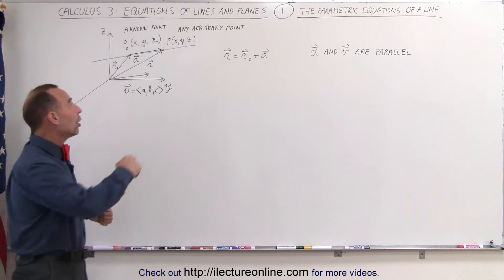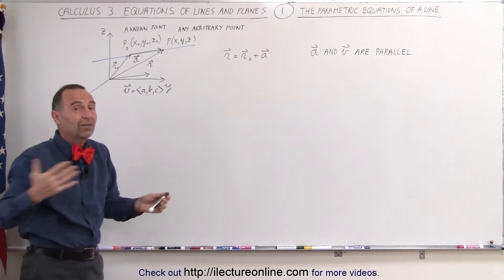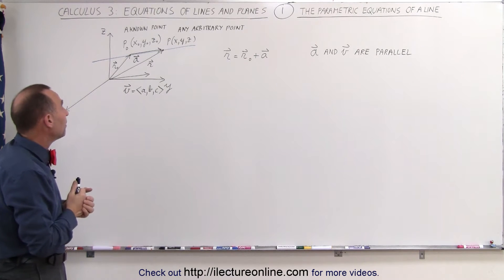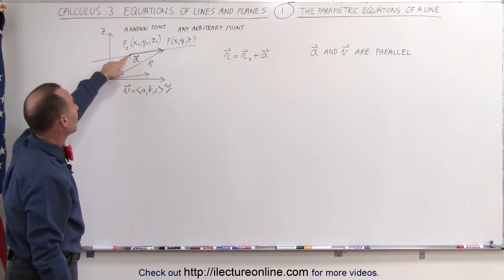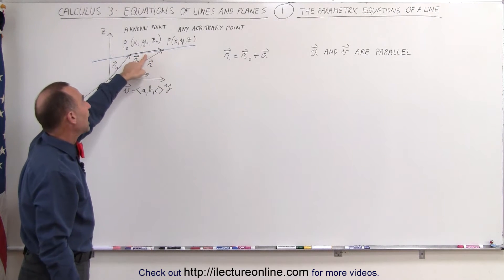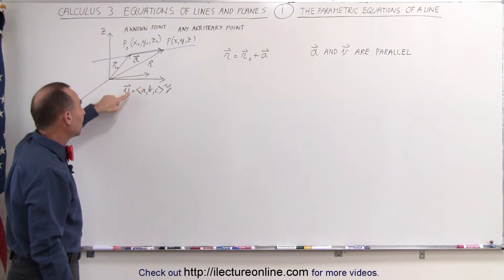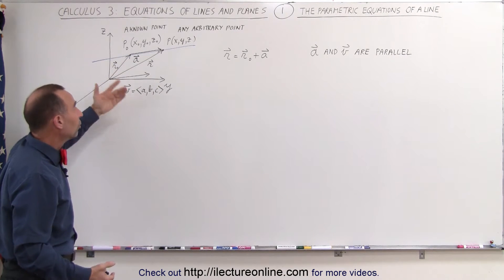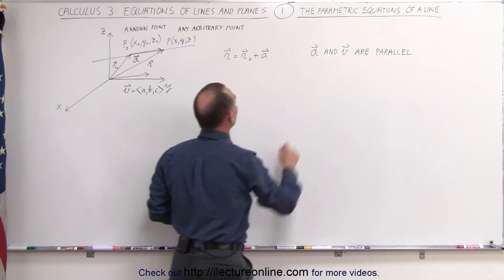We can pick any other arbitrary point on the line called P, which has coordinates x, y, and z, which are unknown — those are the three unknowns. Notice that we can draw a vector from the known point to any arbitrary point and call it a. The vector a must be in the same direction as the vector v, since v is parallel to the line. So we can say that vectors a and v are parallel to one another.